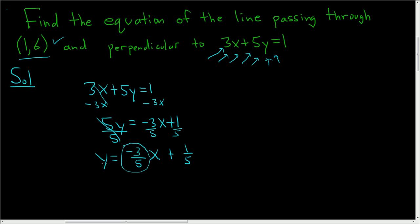Our line is perpendicular so we flip this and put a negative sign. So our slope is 5 over 3 and it's positive. To finish we'll use the point-slope formula for a line.